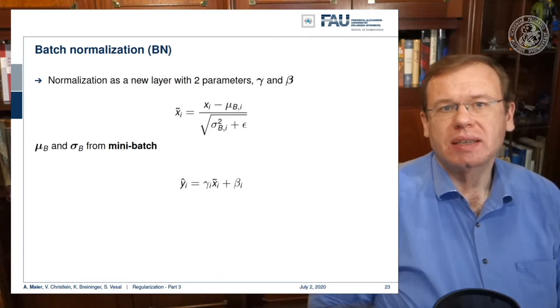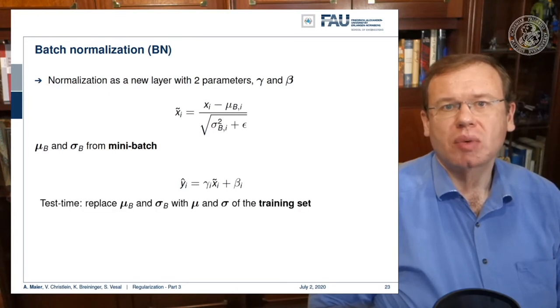So this nice feature can of course only be done during the training. If you want to move on towards the test time, you compute, after you finish the training, the mean and the standard deviation of the batch normalization layer once for the entire training set. And you keep it constant for all future applications of the network.